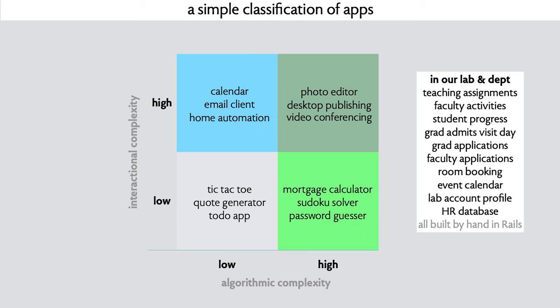Things that have high interactional complexity but very low algorithmic complexity are actually most of the apps we're familiar with - things like calendars, email clients, and home automation systems. These things don't have to do elaborate calculations, but there are a lot of moving parts in how they work. And then there are things that have high algorithmic complexity and high interactional complexity - apps like Photoshop, InDesign, Microsoft Word, and video conferencing systems. Those are apps that are going to take a while to build using GPT.